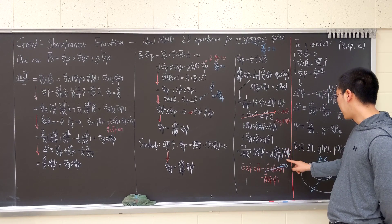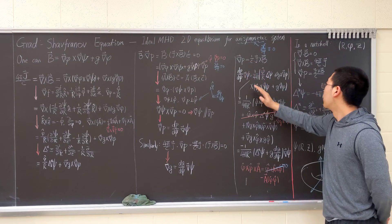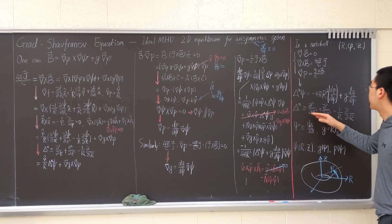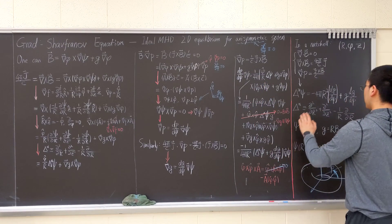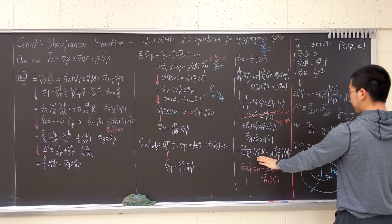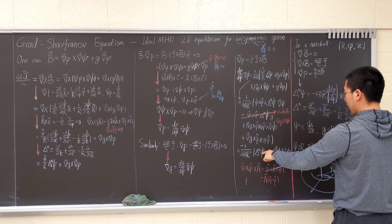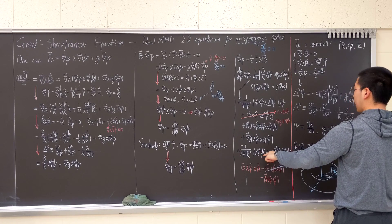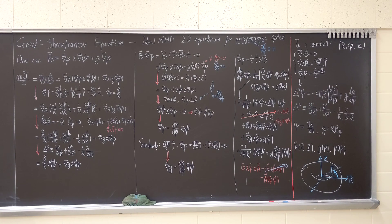We find that we have grad psi here and grad psi here as well — we cancel those out, and we're left with this expression. We put delta star psi on the left-hand side and end up with this final expression. That's the whole derivation of the Grad-Shafranov equation.